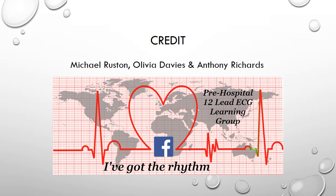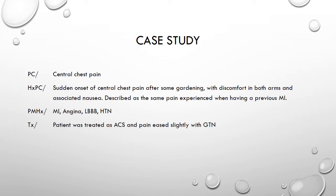The ambulance service received a call for an elderly gentleman complaining of central chest pain. Onset of the pain was after gardening with associated symptoms, and the past medical history included an MI seven months ago and angina. The patient was known to have left bundle branch block and also suffered with hypertension. The crew obtained a 12 Lead ECG, treated the patient as acute coronary syndrome, and the pain was eased slightly with GTN.